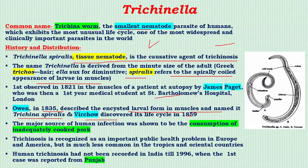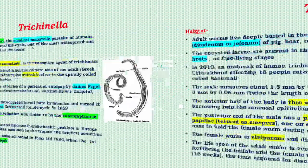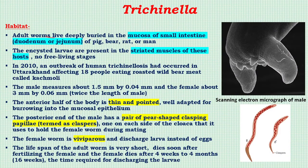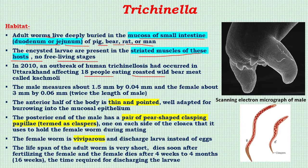First observed in 1821 in the muscles of a patient by James Paget; Owen in 1835 described the encysted larvae and named it Trichina spiralis; Virchow discovered the life cycle in 1859. The major source of infection is the consumption of inadequately cooked pork. Human trichinosis in India was first reported in 1996 from Punjab. The adult worm is found in the mucosa of the small intestine (duodenum or jejunum) in pigs, bears, rats, or humans, while encysted larvae are present in the striated muscles.